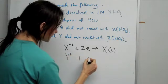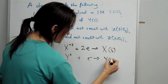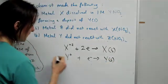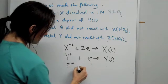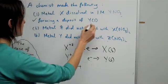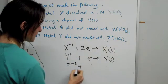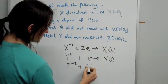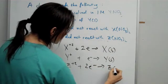So Y⁺ + e⁻ → Y(s). And finally, Z²⁺ + 2e⁻ → Z(s).